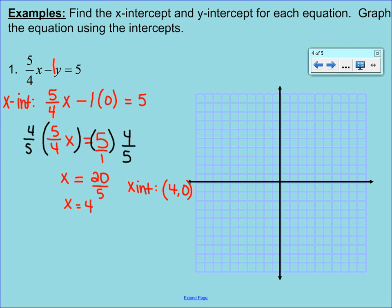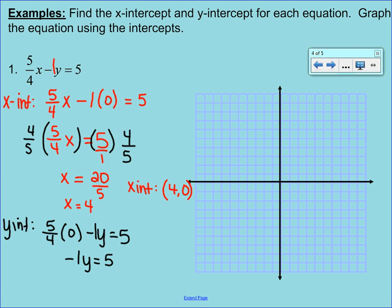Next, we're going to find the y-intercept by plugging a 0 in for x. So we have 5/4 times 0 minus 1y equals 5. That 0 term wipes out, leaving negative 1y equals 5. Dividing both sides by negative 1 gives y equals negative 5. That's not your final answer — the y-intercept is the ordered pair (0, negative 5). What we've actually done is created our own little table of values — we have two points and can make a line using just these two points.